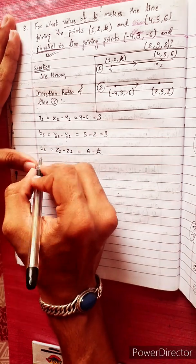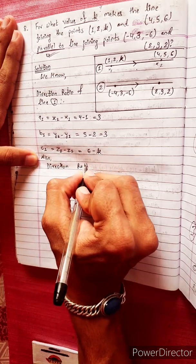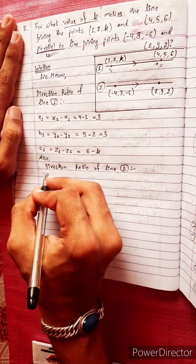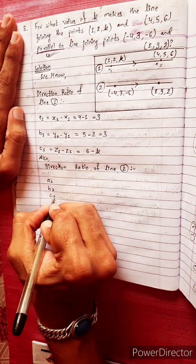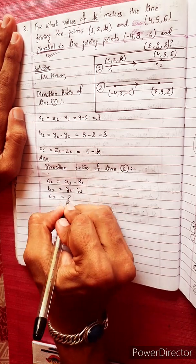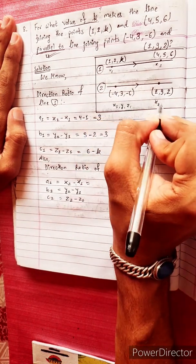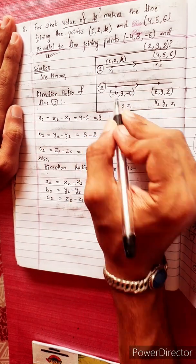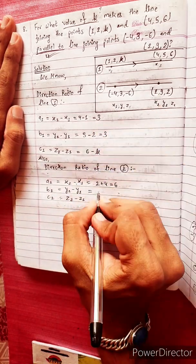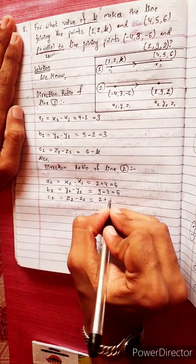Direction ratio of line two: a2, b2, c2. Formula is x2 minus x1, y2 minus y1, z2 minus z1. a2 = 2 minus (-4) = 2 plus 4 = 6. b2 = y2 minus y1 = 9 minus 3 = 6. c2 = z2 minus z1 = 2 minus (-6) = 2 plus 6 = 8.